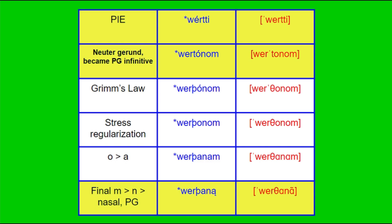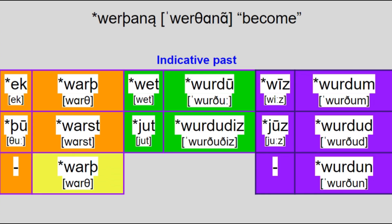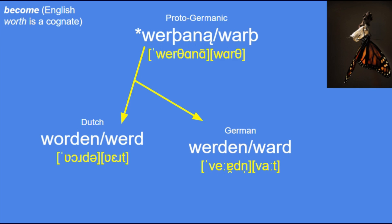For the other example, PIE *wierti became Proto-Germanic *wirtaną, meaning 'become', and its past tense form was *warþ. Both examples followed the regular o-to-a shift that happened in pre-Germanic. This latter verb led to Dutch worden vs. werd and German werden vs. ward, which is now archaic and has been replaced by wurde. So that's it!